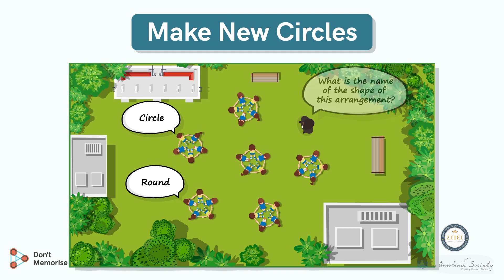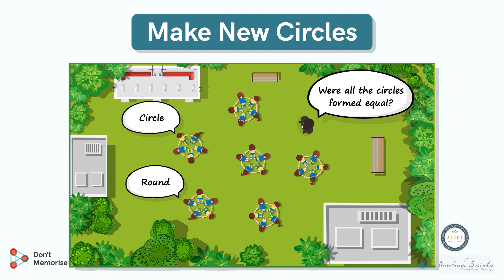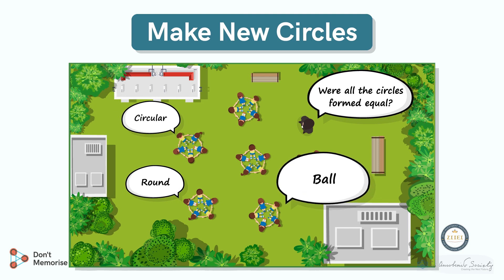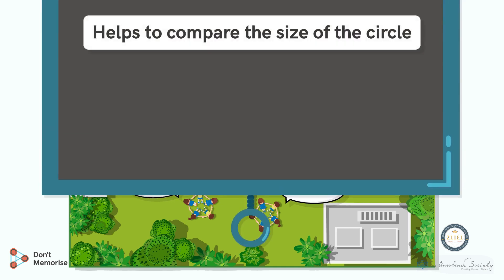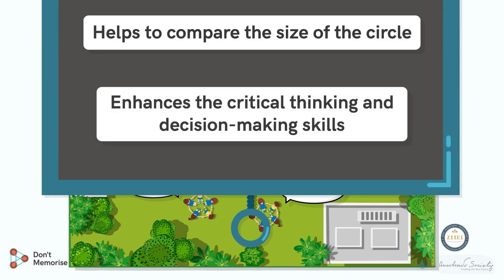Moving on, we shall ask them if all the circles formed were equal. Students may respond saying that some circles were like a ball, or round, or circular, and so on. Accept all responses from students who choose to respond in their local language as well. A question like this will help them compare the size of the circle, enhancing their critical thinking and decision-making skills.